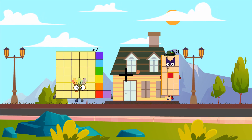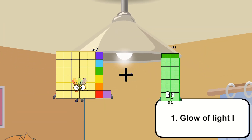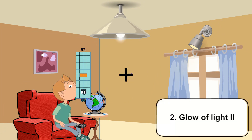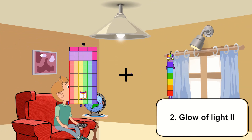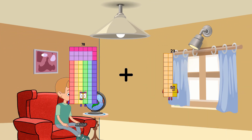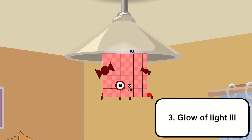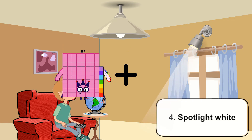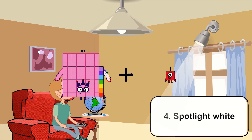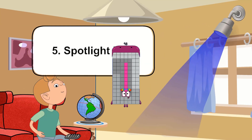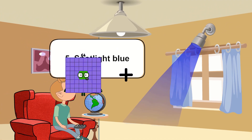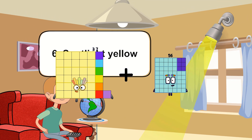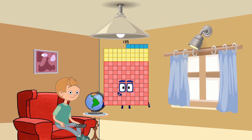37 plus 44 equals 81. 78 plus 23 equals 101. 87 plus 11 equals 98. 37 plus 98 equals 135.